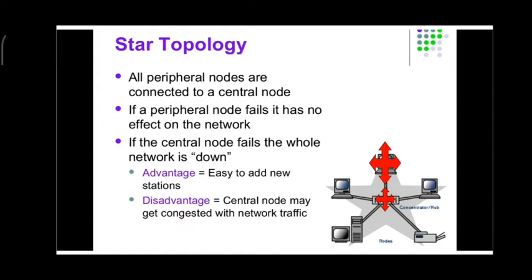The advantage is that it is easy to add new stations. The disadvantage is that the central node may get congested with network traffic — as you add more and more computers, the processing speed decreases and the switch may malfunction. The key point is: when the switch or hub has a problem, the total network goes down, but if one computer is not functioning, it does not affect the rest of the network.